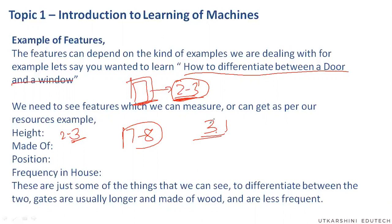We have much smarter brains than computers, even those with machine learning, but for a particular task a computer can learn certain features and certain patterns in those features. When I say features, features are nothing but specific numbers which have some sort of semantic value associated with them.